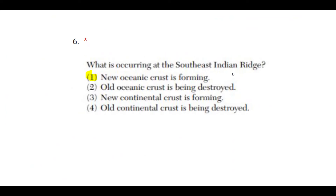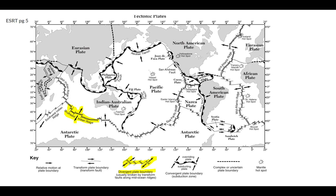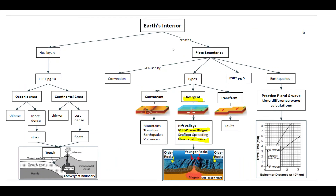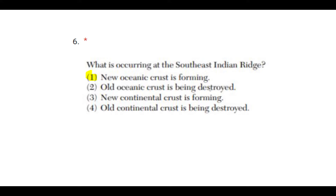Number six: what is occurring at the Southeast Indian Ridge? The correct answer is one, new oceanic crust is forming. When naming a mid-ocean ridge, we name the ocean and then the ridge, so the Southeast Indian Ridge is a mid-ocean ridge. If you go to page 5 of your reference table, you see it's a divergent boundary. Divergent boundaries form mid-ocean ridges and new crust, as magma rises and solidifies. That's why new crust must be forming at the Southeast Indian Ridge.